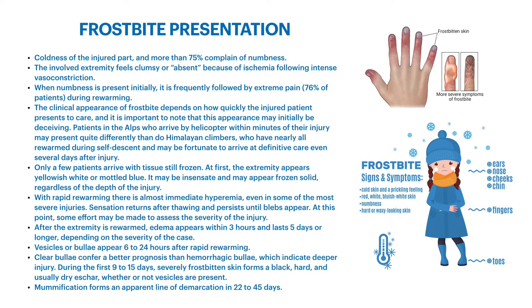Only a few patients arrive at clinical care with their tissues still frozen. At first, the extremity appears yellowish-white or mottled blue and may appear frozen solid regardless of the depth of injury. With rapid rewarming, there is almost immediately hyperemia — a really hot red look — and even in the most severe injuries it can look like this. Sensation returns after thawing and persists until blebs appear. At this point, some effort can be made to assess the severity of injuries, but you still may need time to see what it's going to look like.